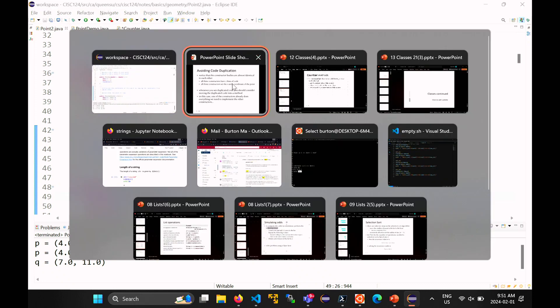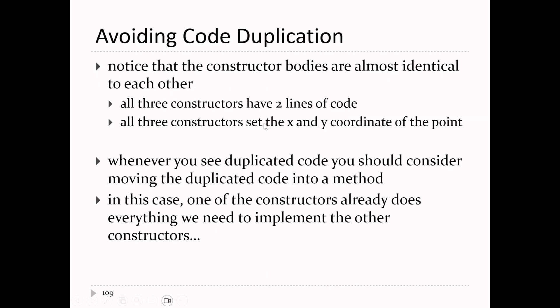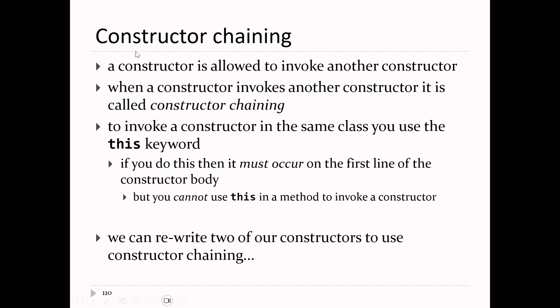Constructor chaining is when a constructor is allowed to call another constructor. It has a particular syntax — it unfortunately reuses the keyword this, which is a little confusing because now this has another meaning. If you want to use constructor chaining, it can only happen on the first line of your constructor body.